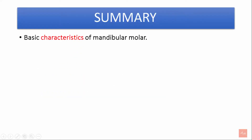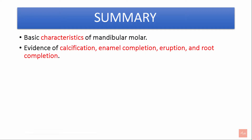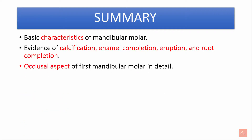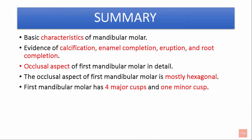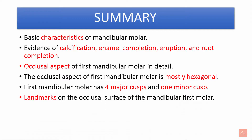To summarize, we learned about the basic characteristics of the mandibular first molar and its occlusal aspect in detail. The occlusal aspect of the first mandibular permanent molar is somewhat hexagonal. It has four major cusps and one minor cusp. The landmarks on the occlusal surface are groove, fossa, pit, ridge, and cusps.